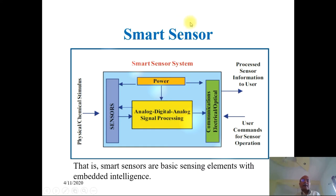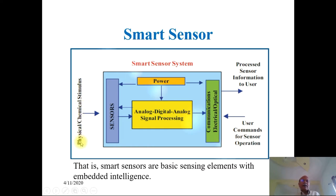What is a smart sensor? Smart sensors are basic sensing elements with embedded intelligence. This is the block diagram of a smart sensor system. On the left-hand side, we have the inputs — also known as stimulus. It could be a physical or chemical stimulus, a physical input signal or chemical input signal.